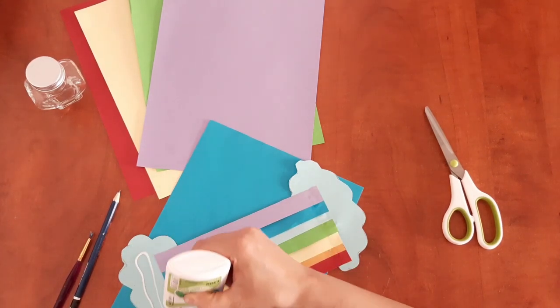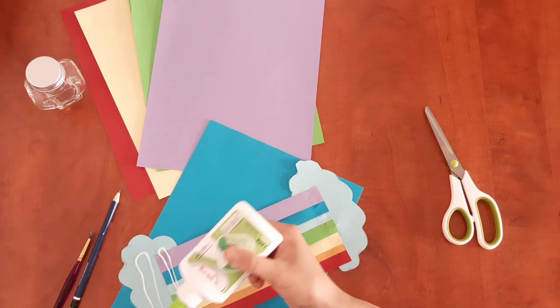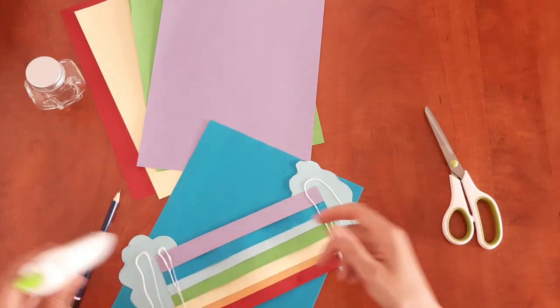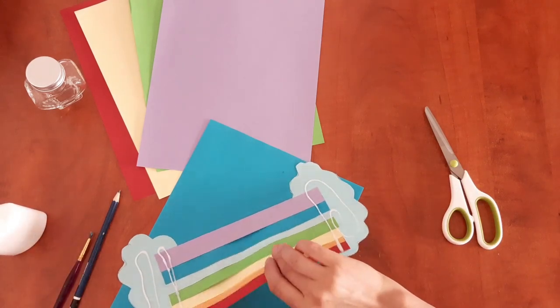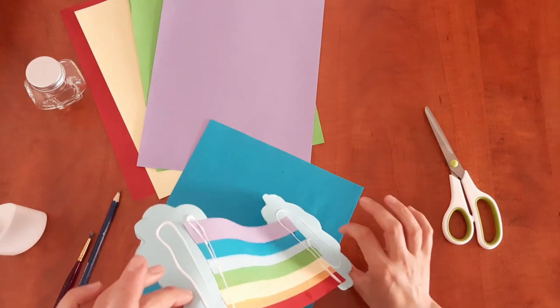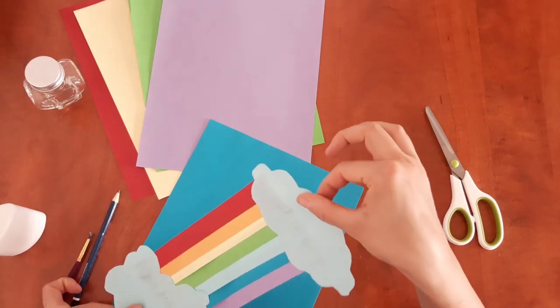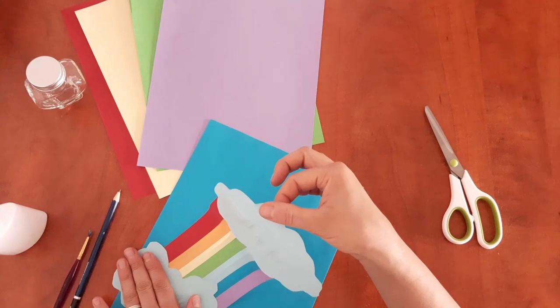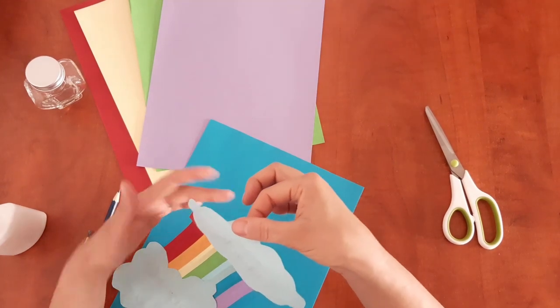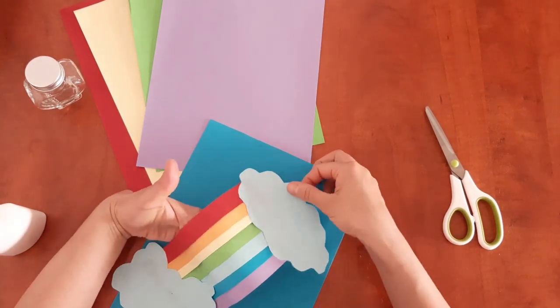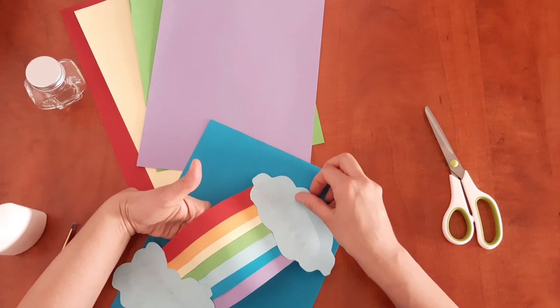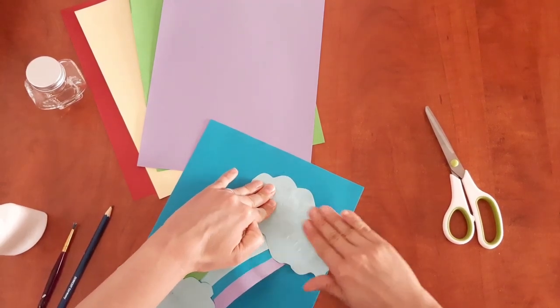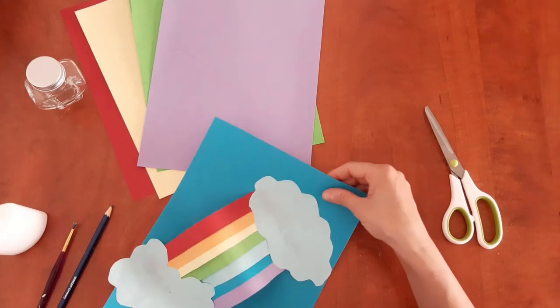Put glue on both clouds. Glue the first one. Hold the other one, don't glue it yet. After, press. Put your hands behind the rainbow to create like a bridge, and then glue the other cloud.